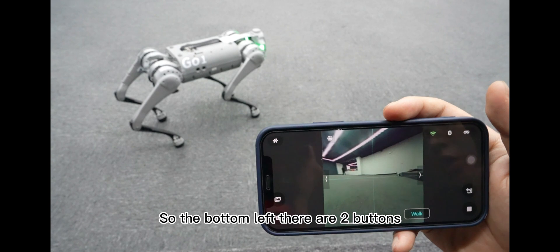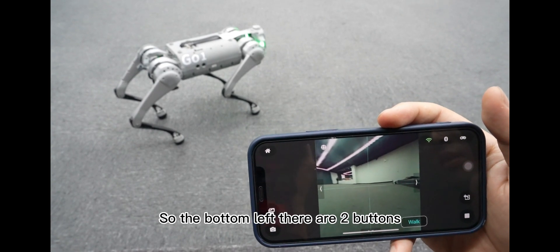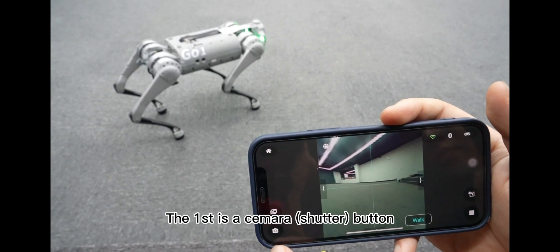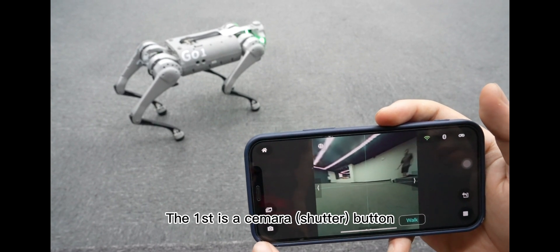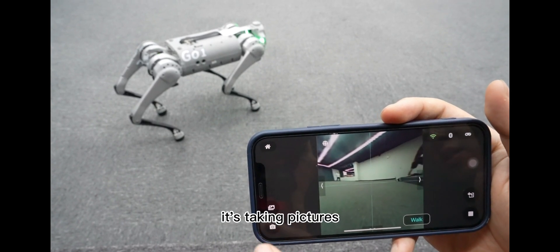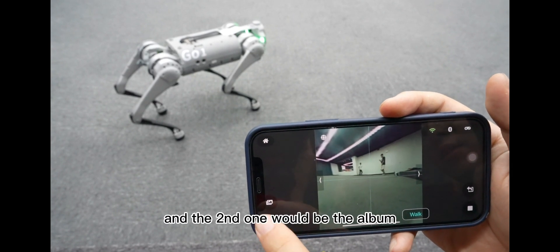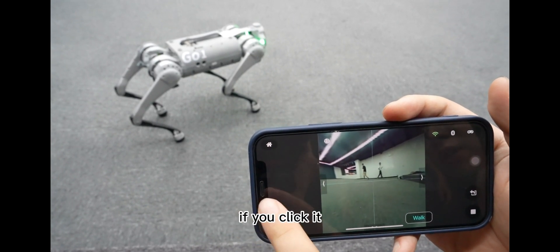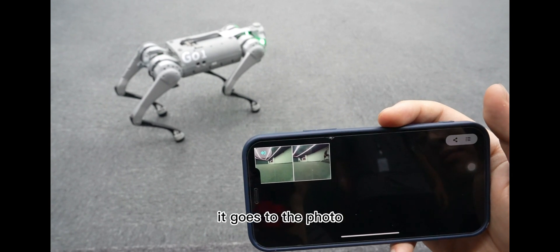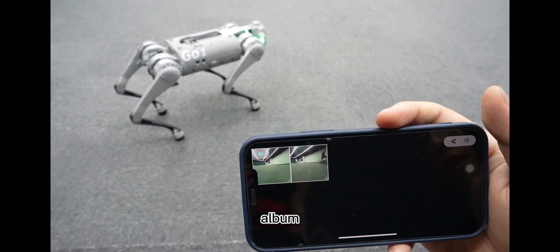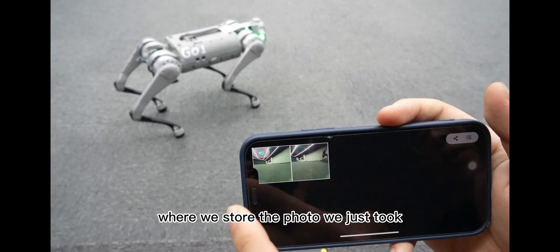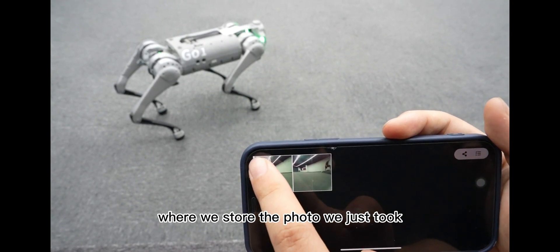So the bottom left, there are two buttons. The first one is the camera button. If you press it, it's taking pictures. And the second one will be the album. If you click it, it goes to the photo album where we store the photo we just took.